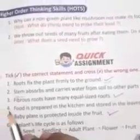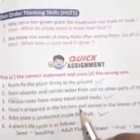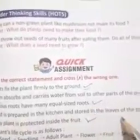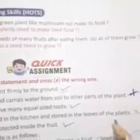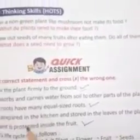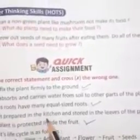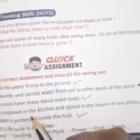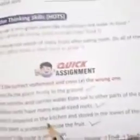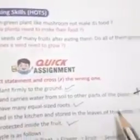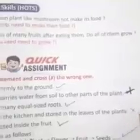Number 4: Food is prepared in the kitchen and stored in the leaves of the plants. No — food is prepared in the leaves; that is called the kitchen of the plant. So it is wrong.